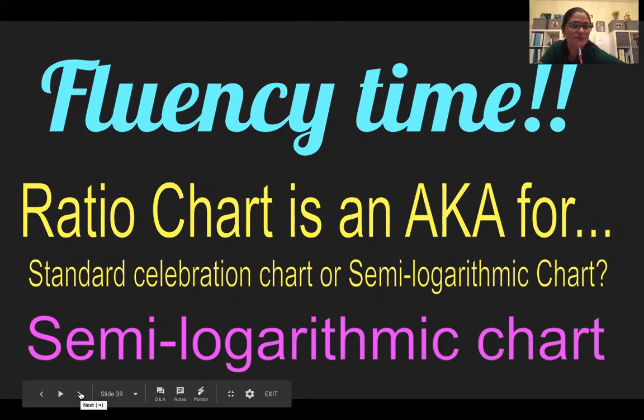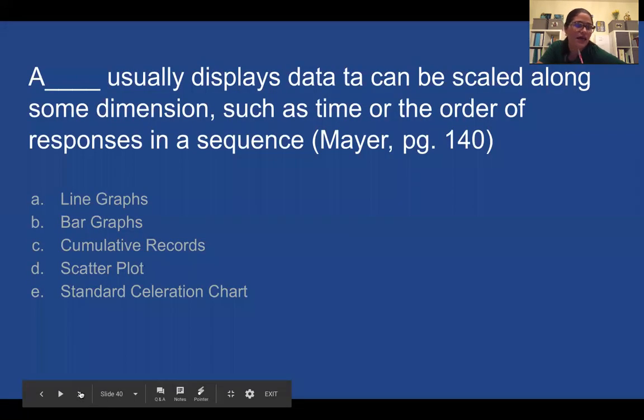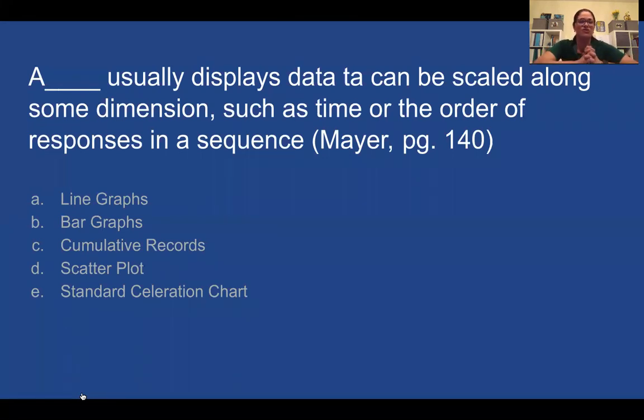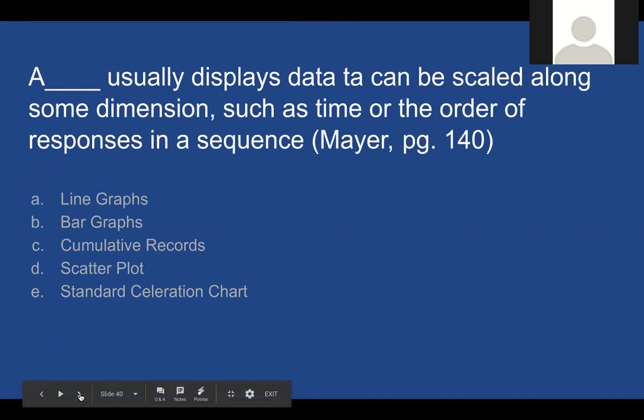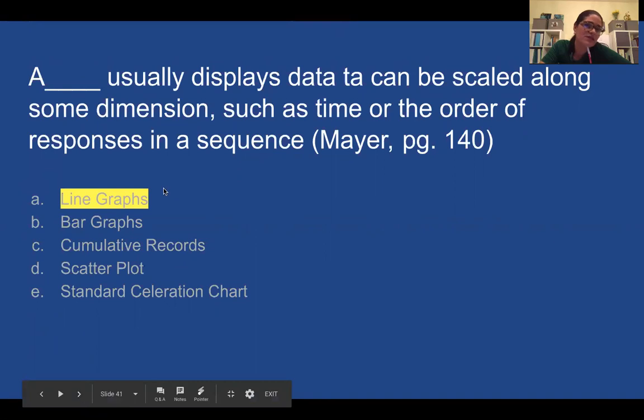A blank usually displays data that can be scaled along some dimension such as time or the order of responses in a sequence. Line graph, bar graph, cumulative records, scatterplot, standard acceleration chart. I think I know. Is it line graph? I have one for line graph. I'll go line graph. Did I have three for line graph? Yeah, okay, yes.